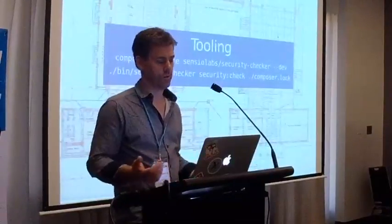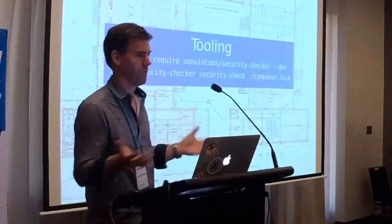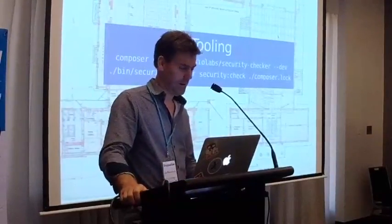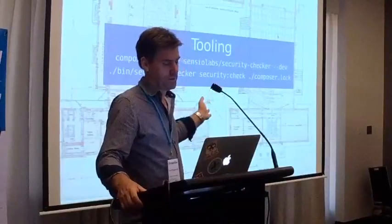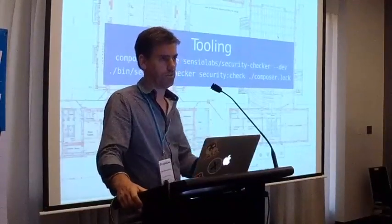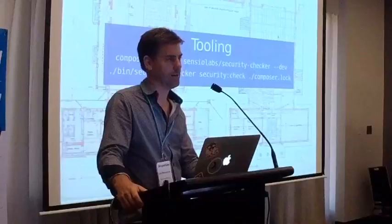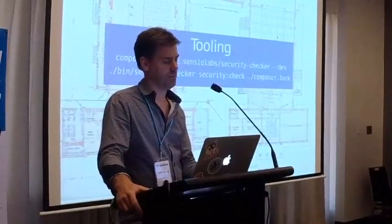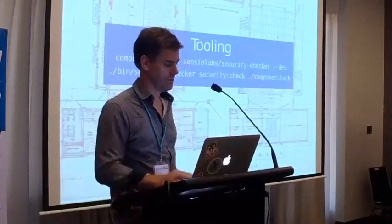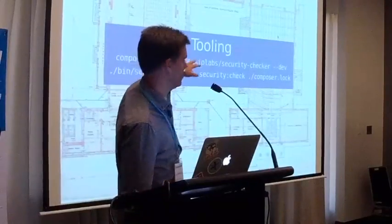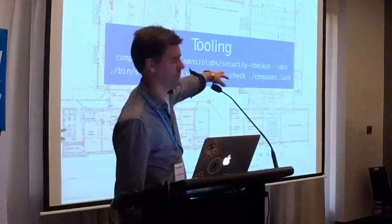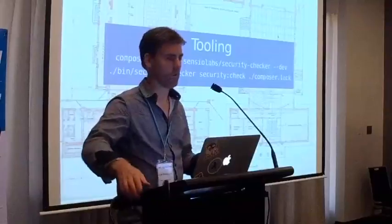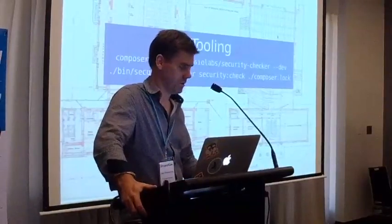There's also tooling to integrate this into an automated build process. If you use the SensioLabs security checker, you build it into your tooling. As part of your build process you run the security checker — first line installs it, second line runs it: bin/security-checker security:check, passing the path to your composer.lock. That will fail the build if you've got insecure versions in your composer.lock.